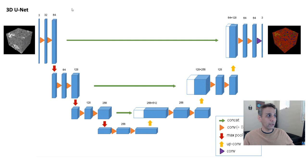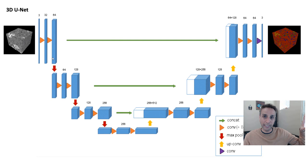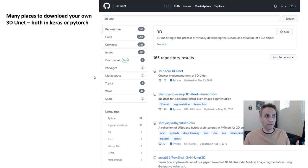Just like U-Net, you can replace the encoder part with one of the backbones like ResNet or VGG16 and design the upscaling part to mirror the encoder. So you can still have the U-Net architecture but replace your encoder with something else. We are going to use exactly that approach.